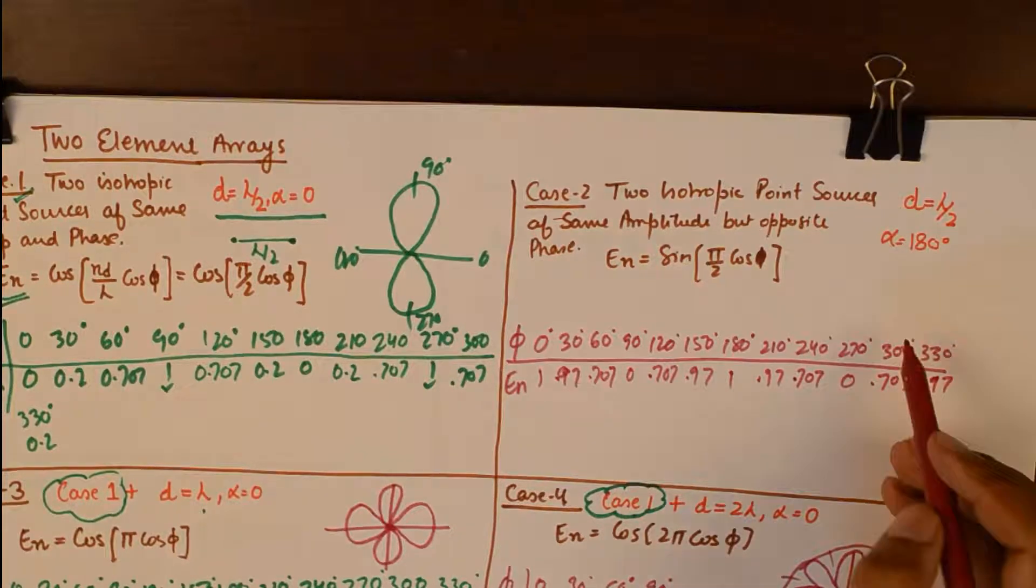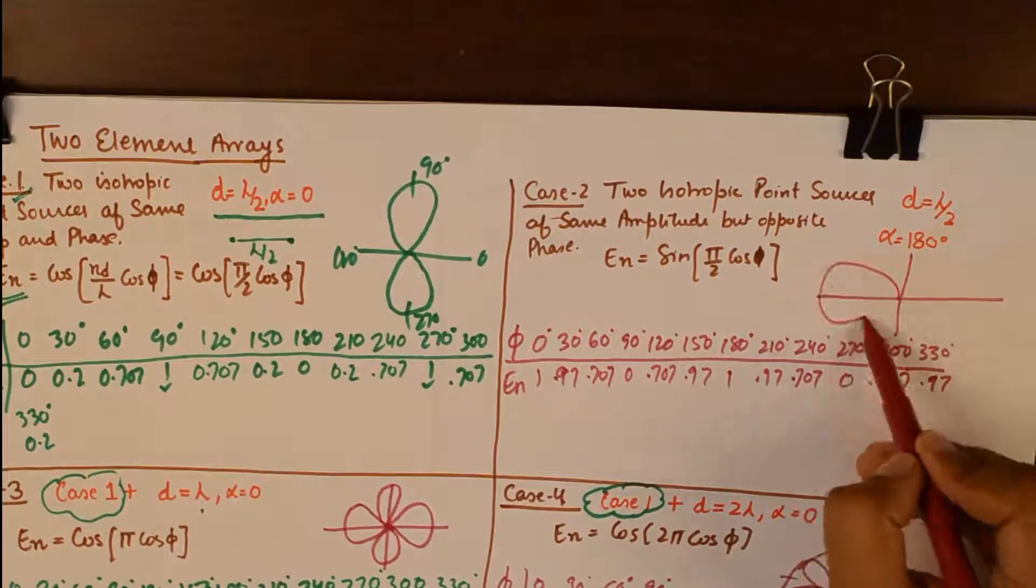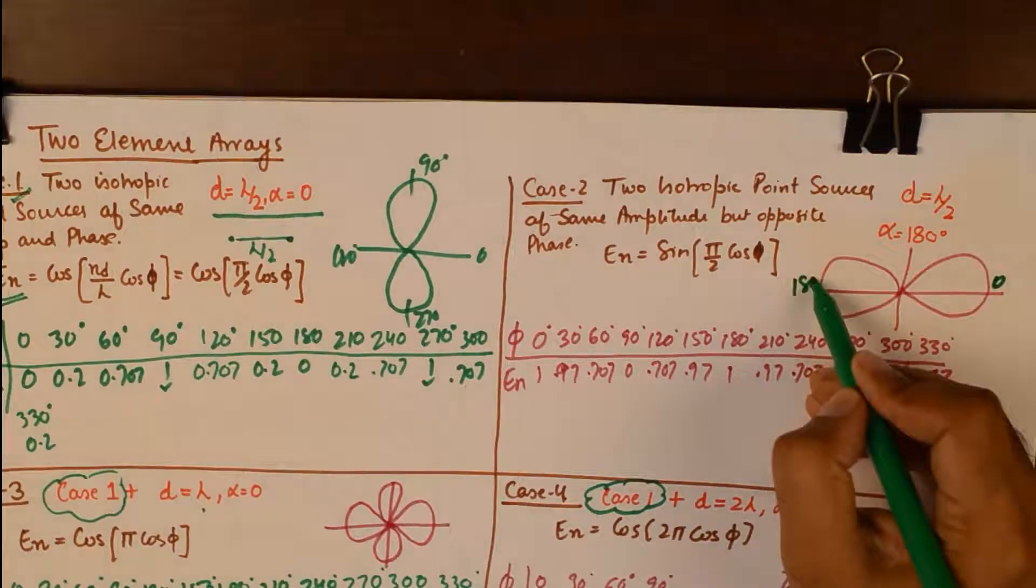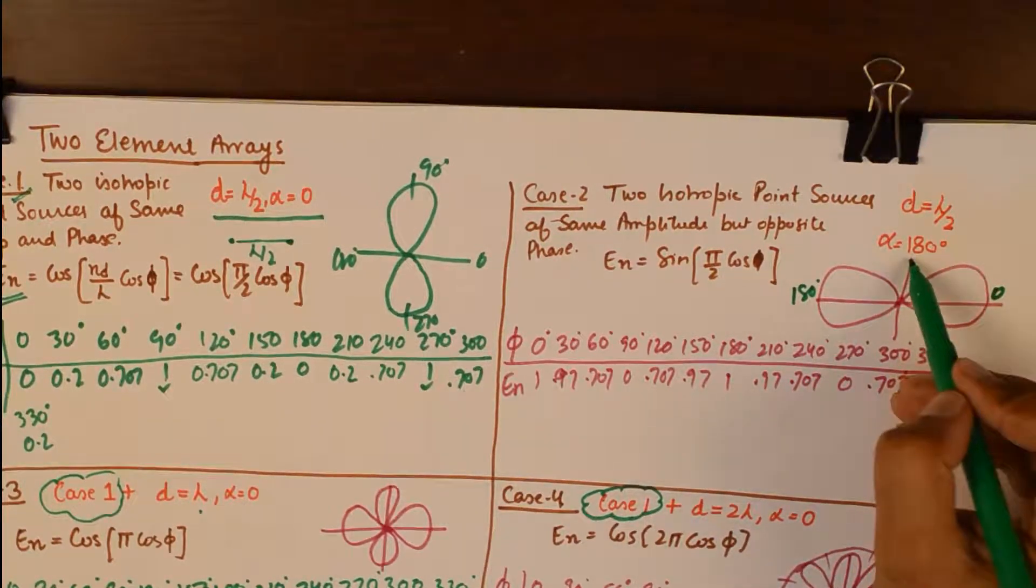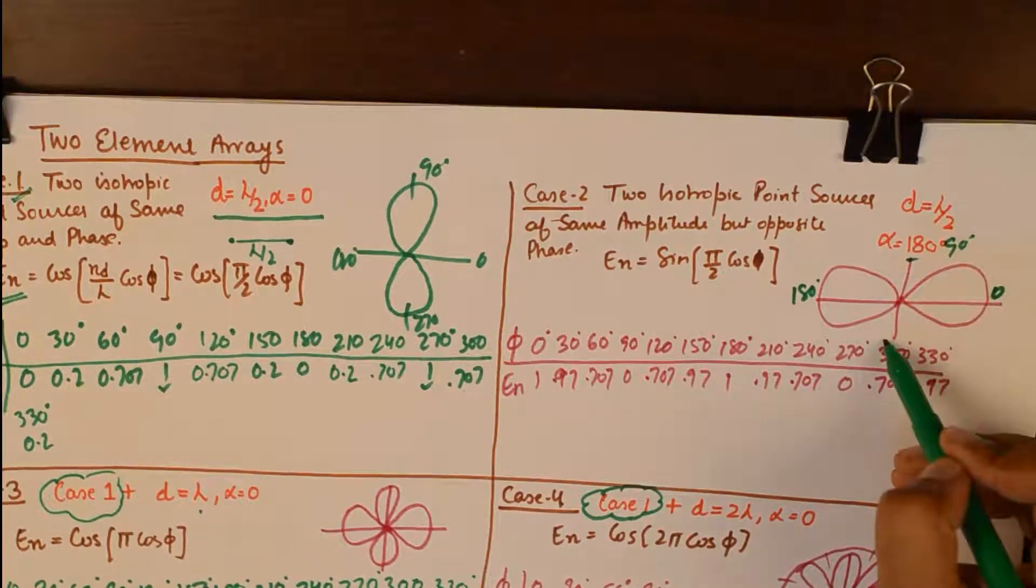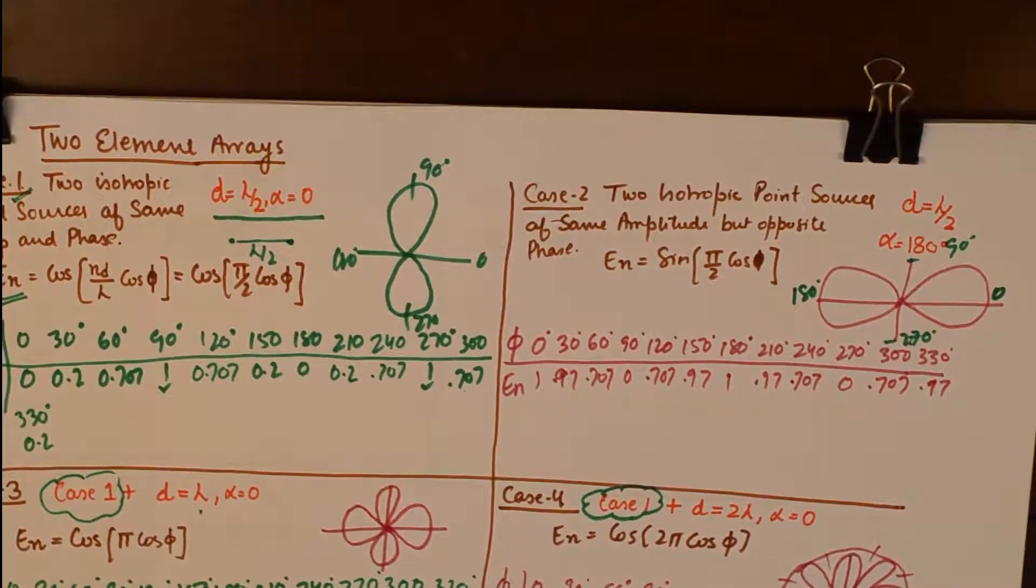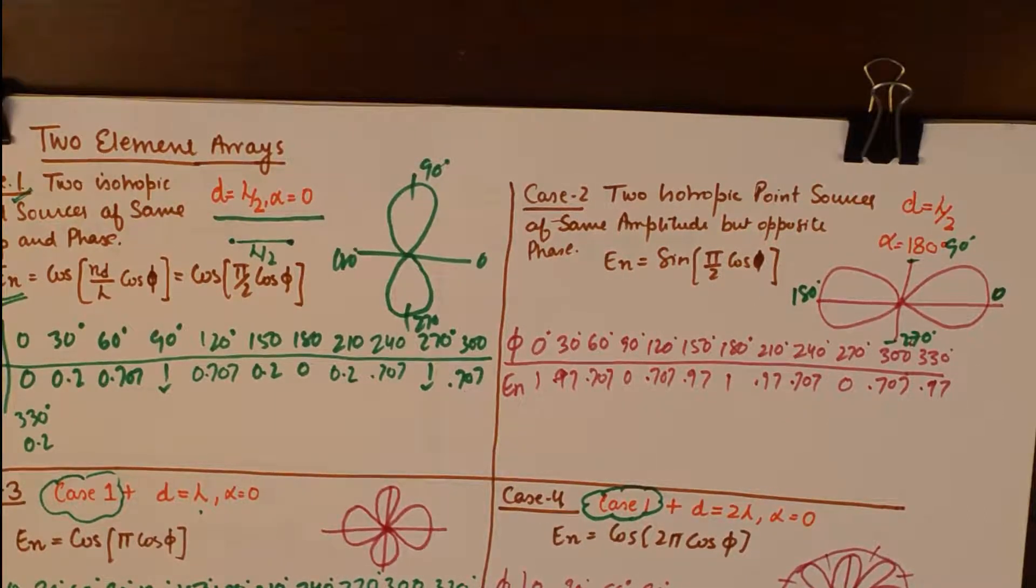So if I draw the radiation pattern that will look something like this, with principal maximas at zero and 180, and nulls at 90 and 270. So again a popular case, but we will make some more changes in this case and see what all new cases evolve.